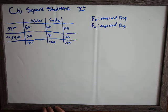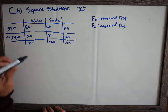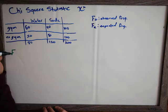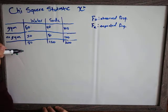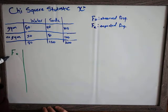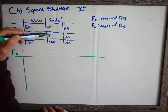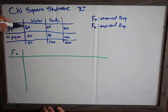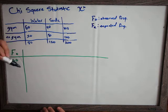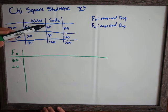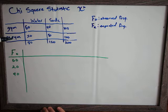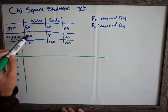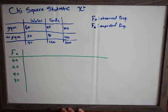We're going to build a table to help us find the chi-square. The first column of our table is called F sub O, which stands for observed frequencies. Under F-O, we put the actual frequencies observed in our data: 60 for people who like water and go to the gym, 20 for people who like water and don't go to the gym, 40 for people who like soda and go to the gym, and 80 for people who like soda and don't go to the gym.